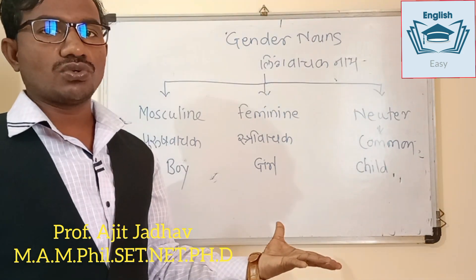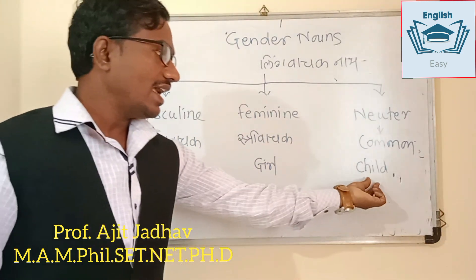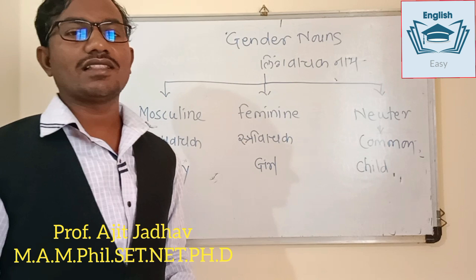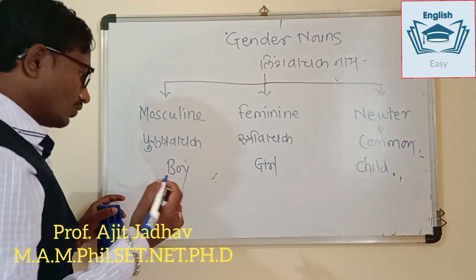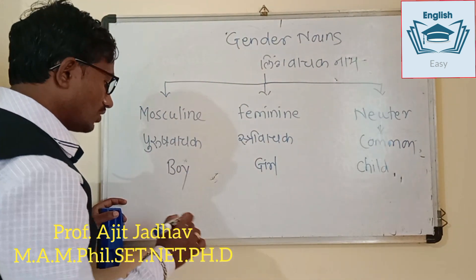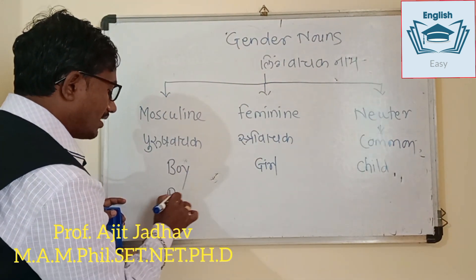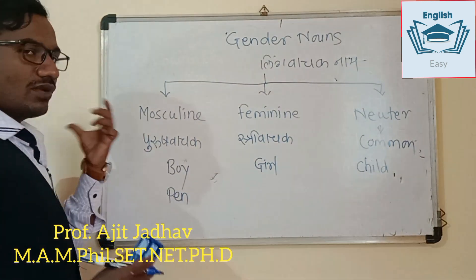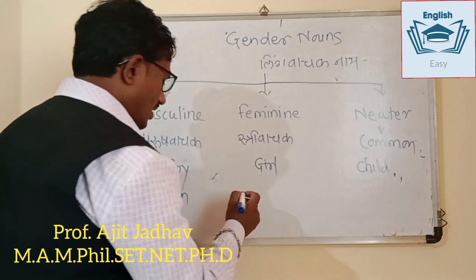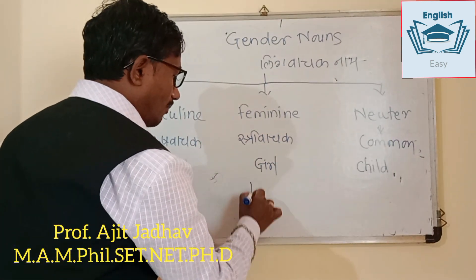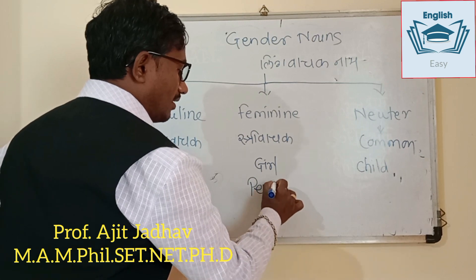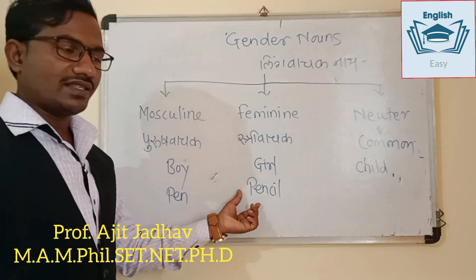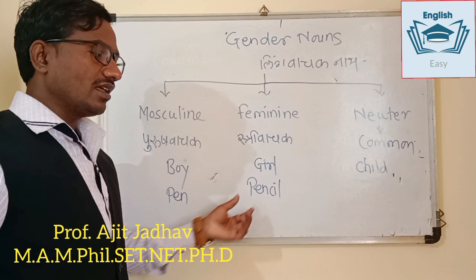If a child is born, then the mother is born. These are the non-neuter and children. That's the word pen. So, this pen is masculine, which means a pencil. If a pencil is a strip matching, pencils are the neuter.